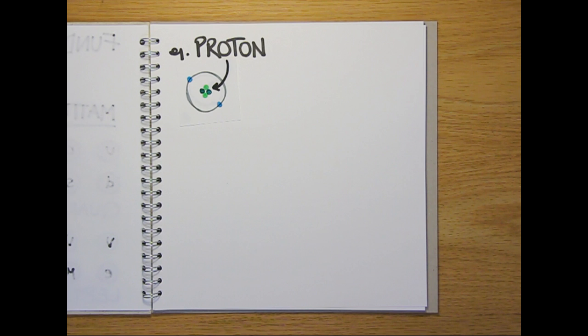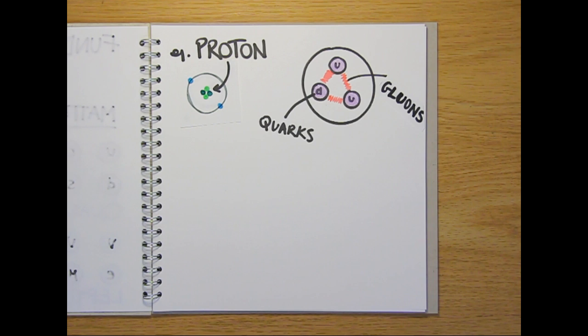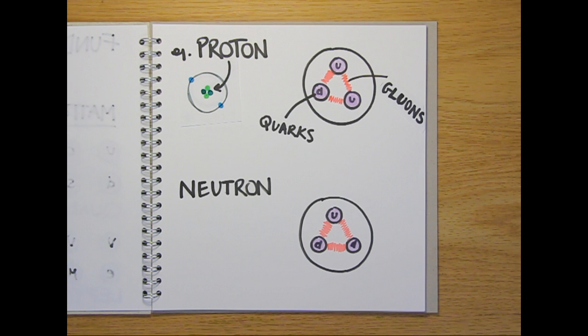Fundamental particles make up all of the matter that we know of, so if we look at something like a proton, which is a positively charged particle that you find in the nucleus of an atom, we can see that it's made up of three quarks held together by gluons, which are one of the types of the force-carrying bosons. And neutrons, another type of particle found in the nuclei of atoms, are made up of a slightly different combination of quarks held together by gluons.